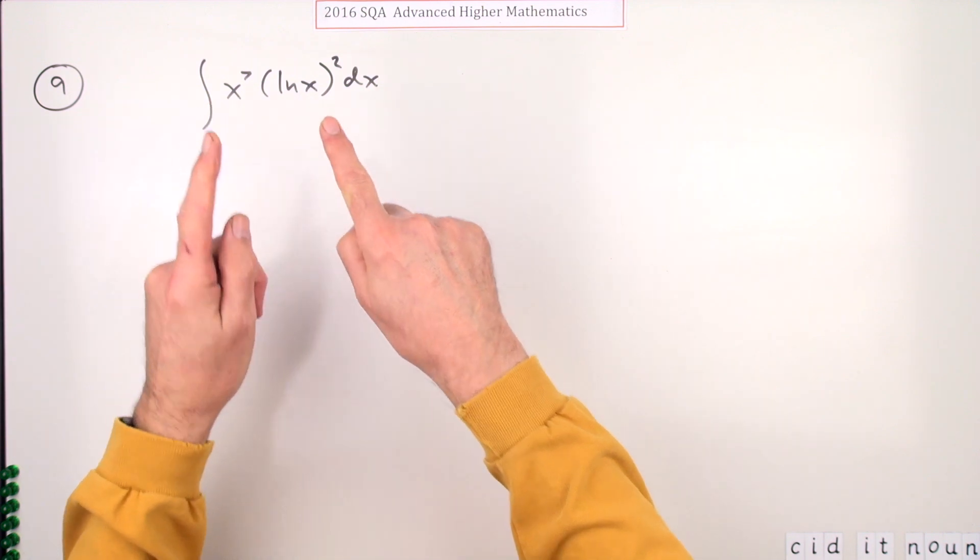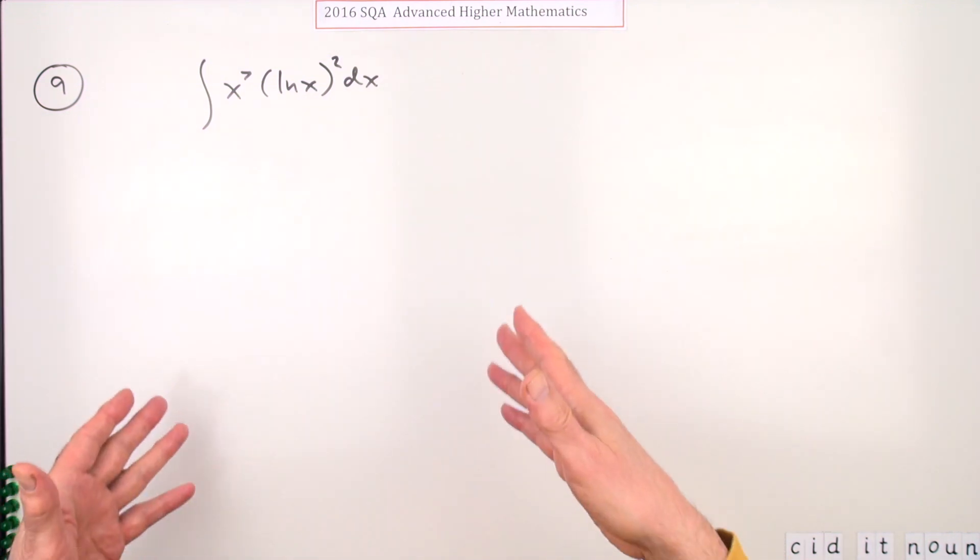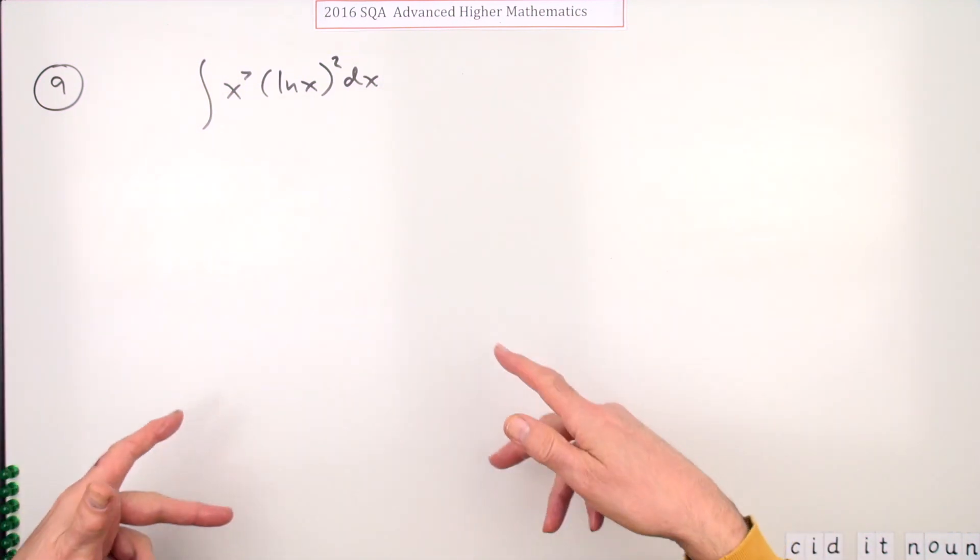So the first thing you've got to decide is which one will you integrate and which one will you differentiate. Now the marking scheme is a little bit vague here, but basically it's three marks for each part because you'll need to go through it twice with this one.